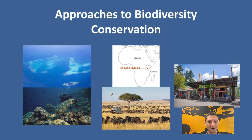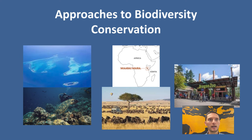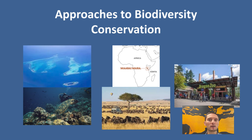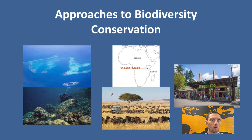Much of this video is doom and gloom, but there are positives. There are many organizations working to reestablish species that are threatened or near extinction, as well as ecosystems. A couple of approaches to biodiversity conservation: the first is called In Situ — a method to conserve species in their natural habitats. This would be the ideal approach, accomplished by creating protected areas. For example, the Maasai Mara in Africa is a protected area where local species can survive without the threat of poaching. There are also marine environment protected areas throughout the world.